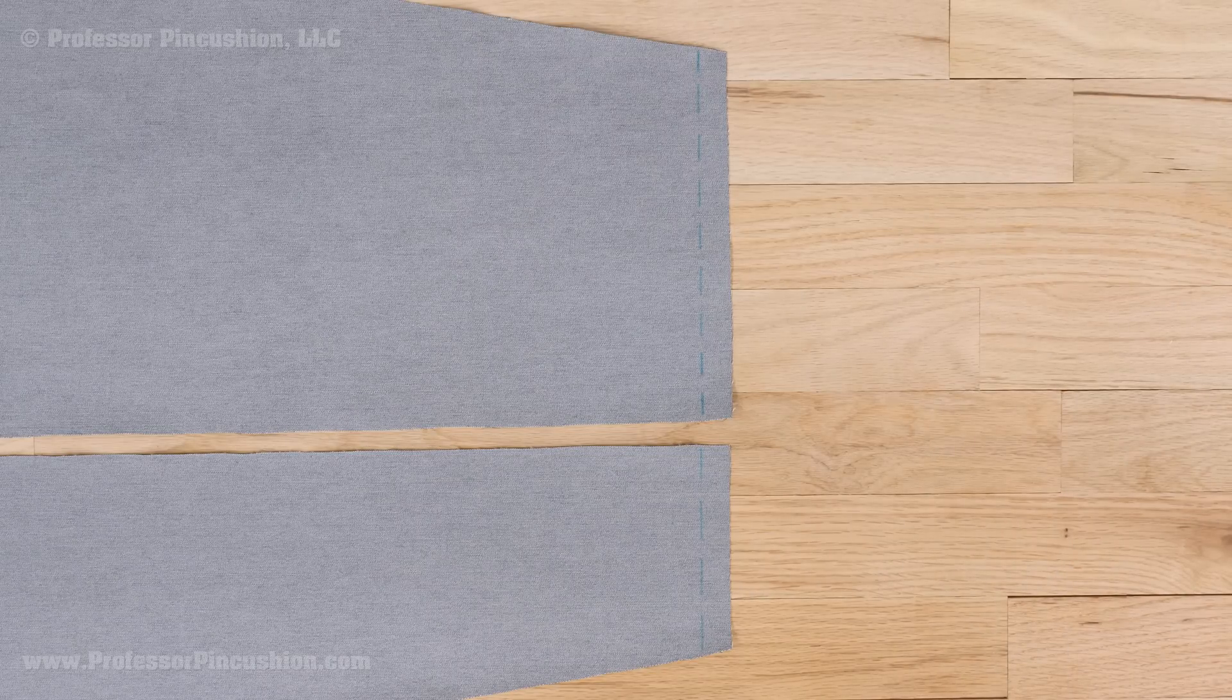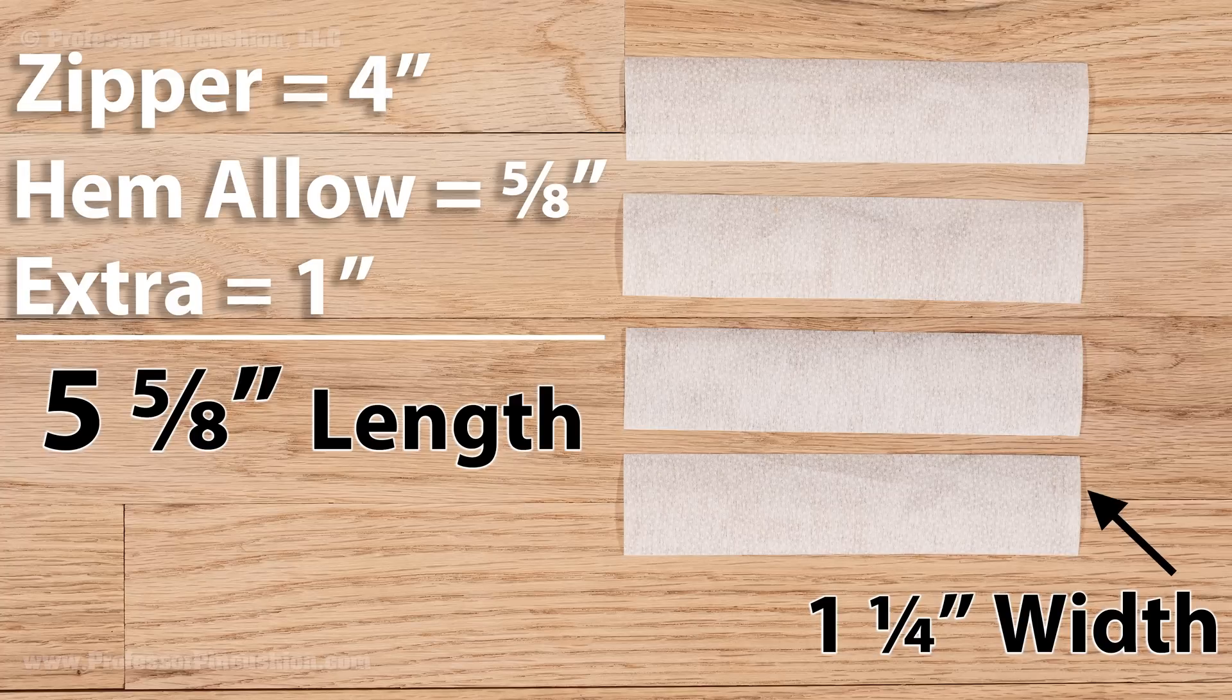Cut out four strips of fusible interfacing. The width of the strip should be one and a quarter inches. The length should be the length of your zipper plus hem allowance and an extra one inch. My zipper length is 4 inches plus 5/8 of an inch for hem allowance plus another inch, so my interfacing length is 5 and 5/8.